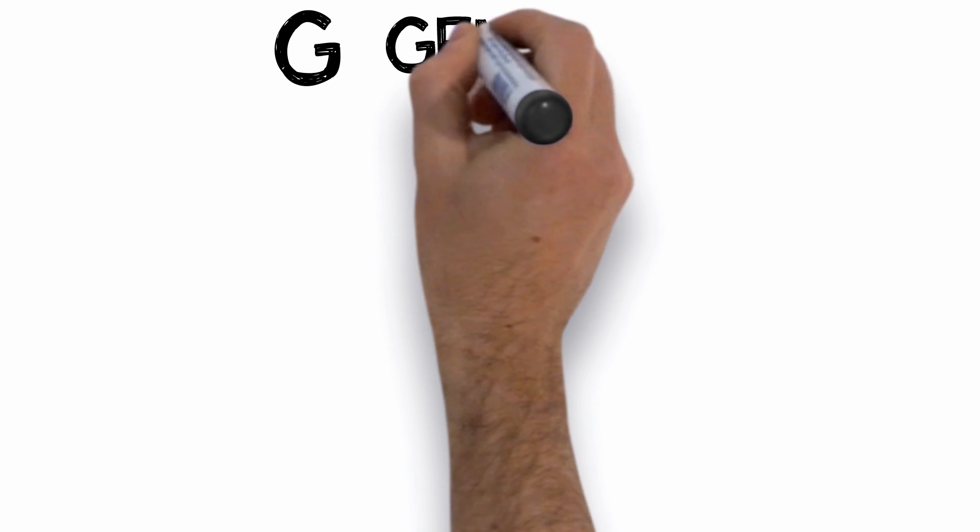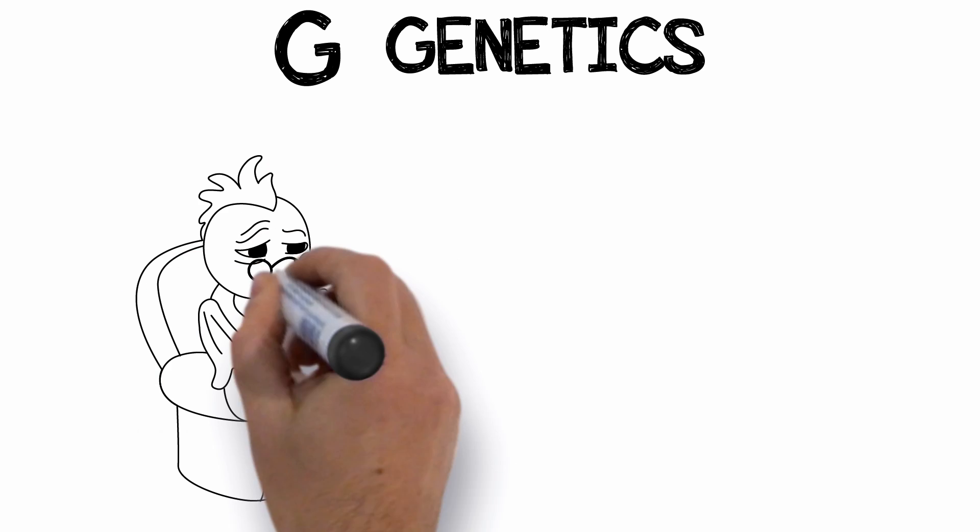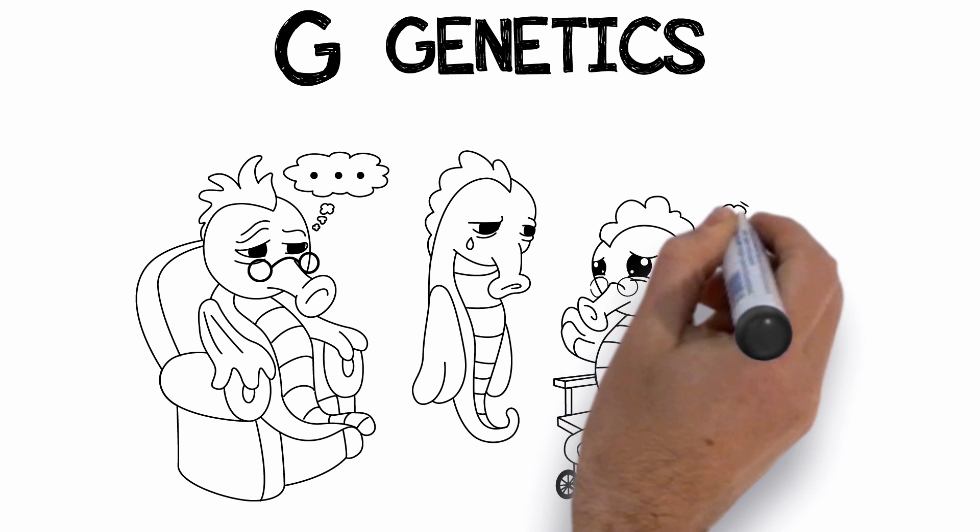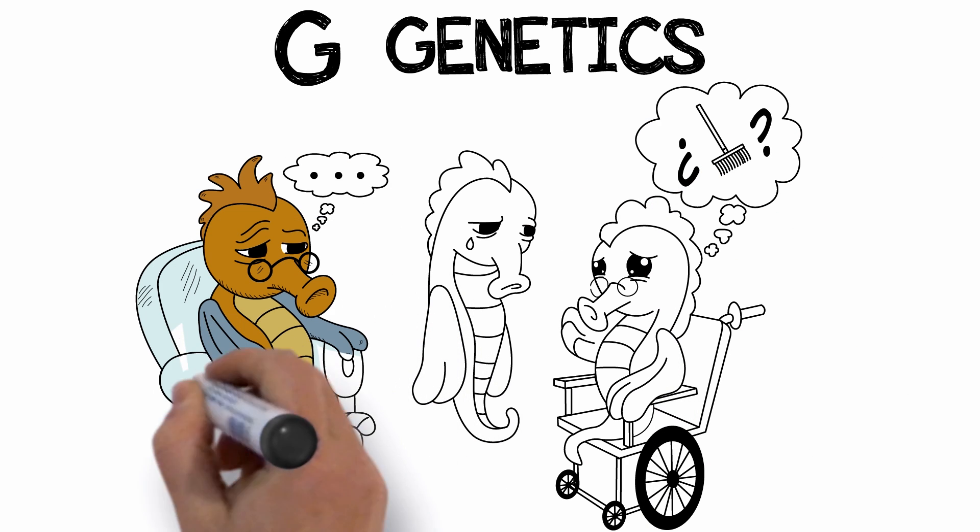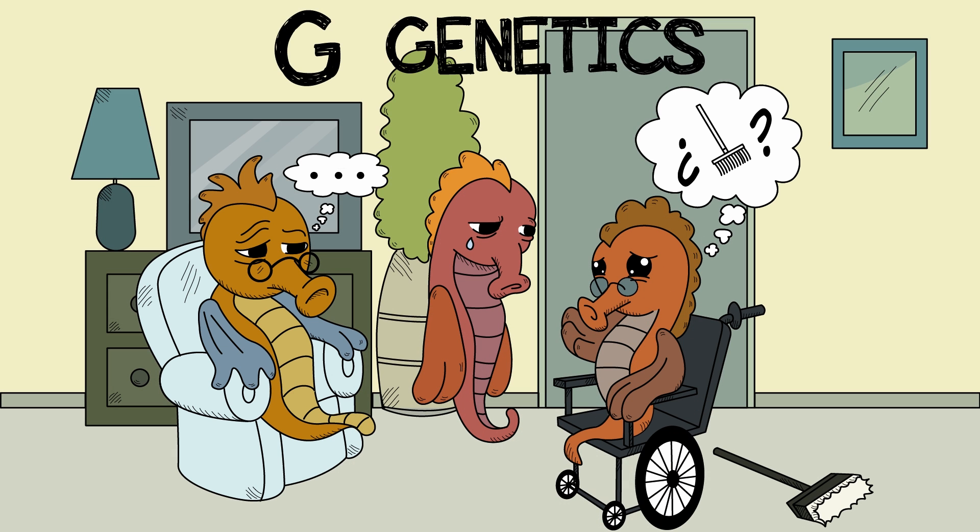G is for genetics. Memory problems can run in families. Scarlet and Sam had a father and grandmother who both lost their memory as they got older. It was very hard on their family. They were worried that maybe they would lose their memory too.